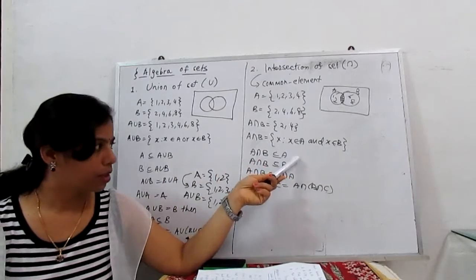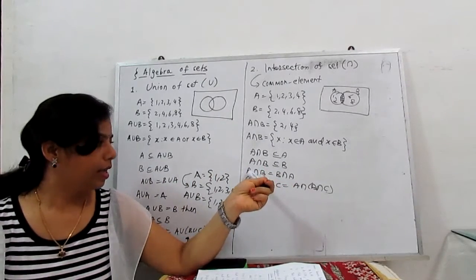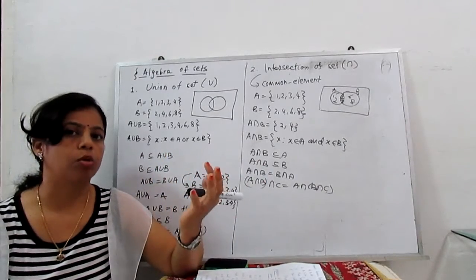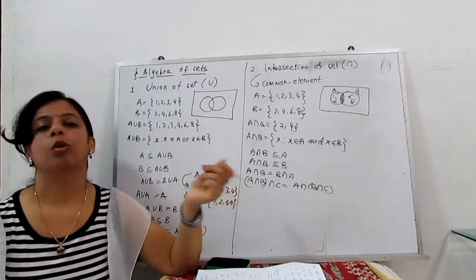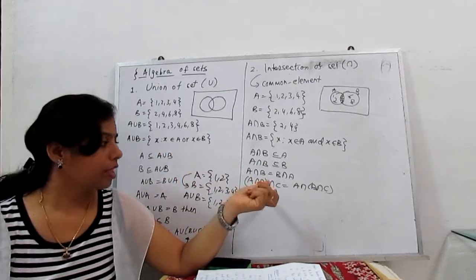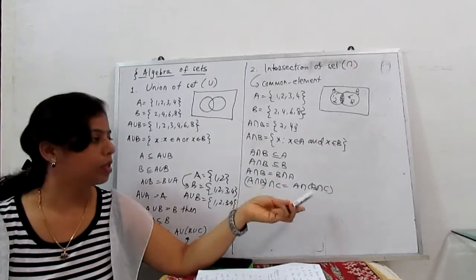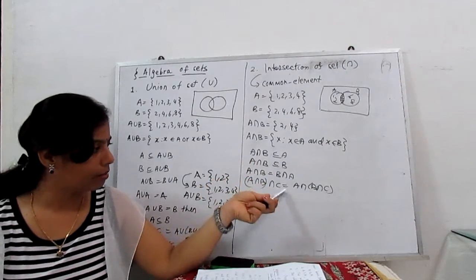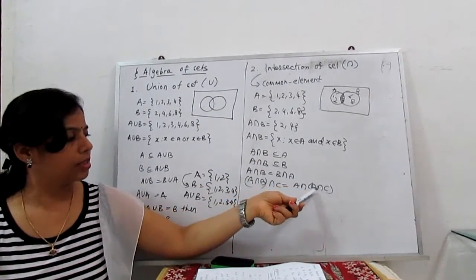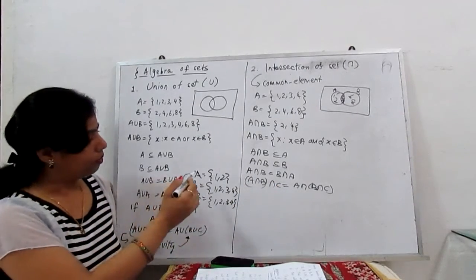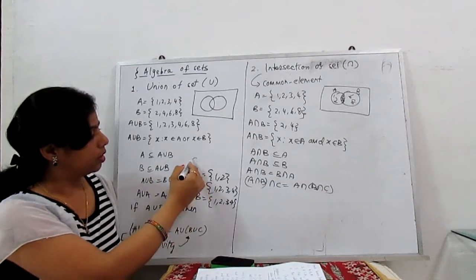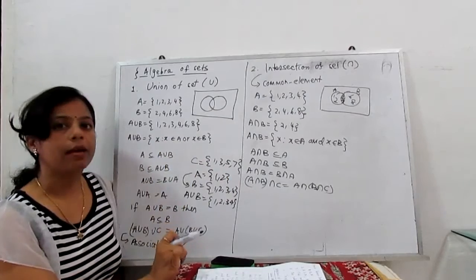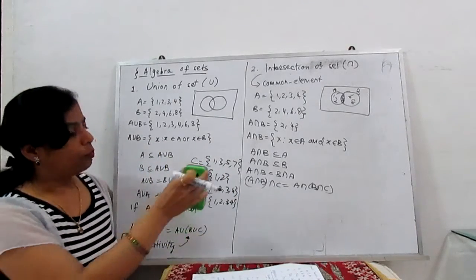A intersection B is always a subset of A, and A intersection B is always a subset of B. A intersection B equals B intersection A — the result is the same because we are sorting out the common elements. Intersection also follows the associative law of algebra: A intersection (B intersection C) equals (A intersection B) intersection C.